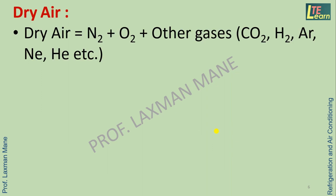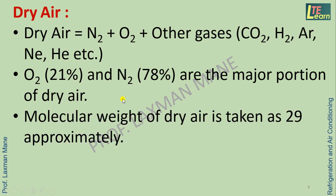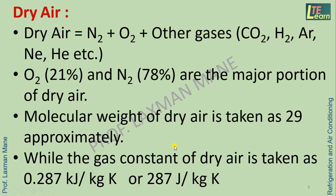Dry air is a combination of nitrogen, oxygen and other gases which includes carbon dioxide, hydrogen, argon, neon, helium, etc. In the atmospheric air there is 21% oxygen and 78% nitrogen, which are the major portion of dry air. Molecular weight of dry air is taken as 29 approximately, and the specific gas constant for dry air is taken as 0.287 kJ per kg.